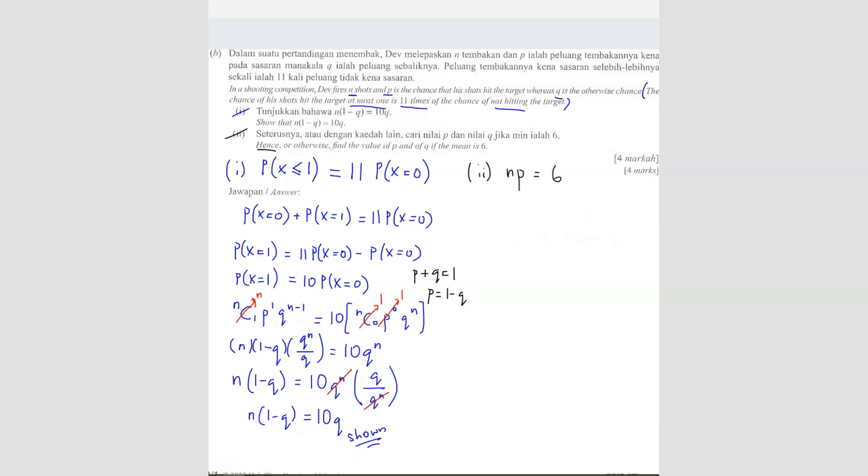So the mean is 6. So NP. We want to find. We can use this equation here. How do you find N? You can shift the (1 minus Q) to the other side. So you get 10Q over (1 minus Q). So this is N.